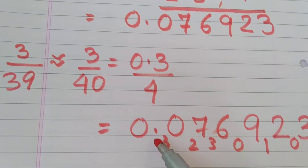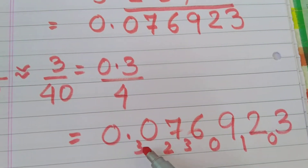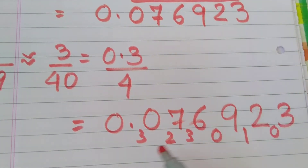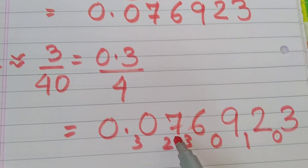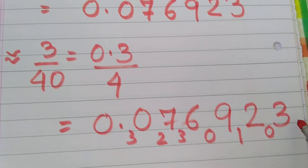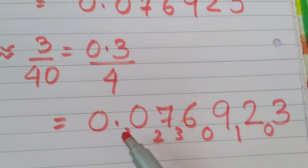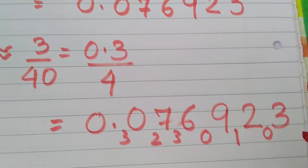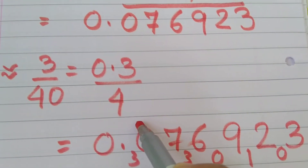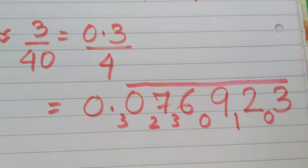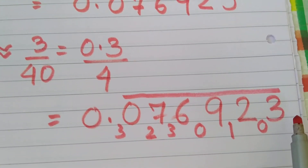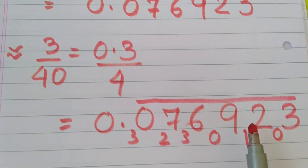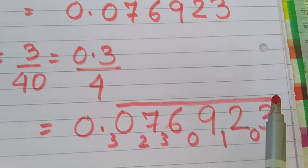See, here again you are getting the same remainder, which means that you will keep getting all these same digits and the same group will be repeated. So that's how we come to know we have got the answer, which is 0.076923 bar.